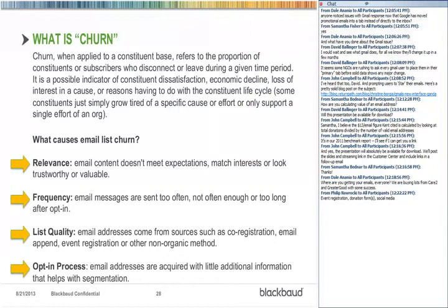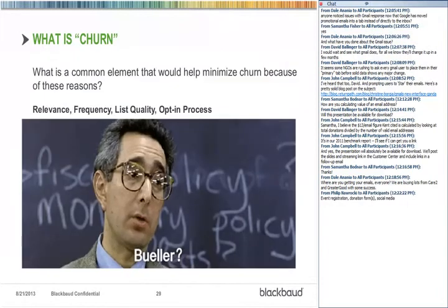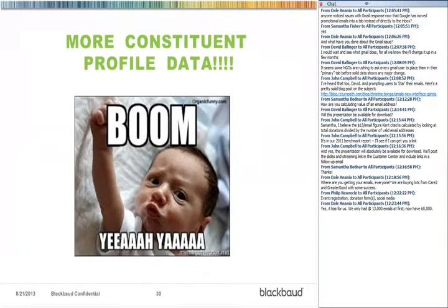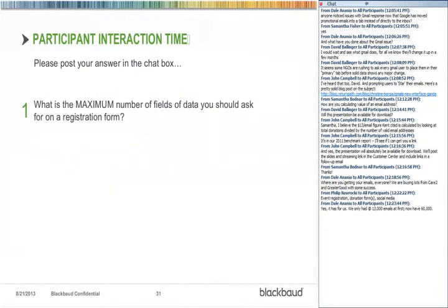What is the common element that would help minimize churn from all these causes — relevancy, frequency, list quality, and the opt-in process? It is more constituent profile data. The more profile data you can gather, the more you can segment, personalize, and get your message across to one person in one message. That's what we want to look at today: the registration flow, and recommendations for maximizing the data you collect without overdoing it and scaring people off.